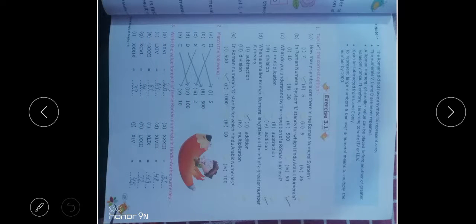How many symbols are there in Roman system? The answer is 7. There are 7 symbols in the Roman number system. In Roman numeral system, L stands for which Hindu Arabic numeral? The answer is 50.